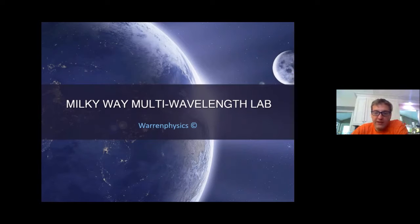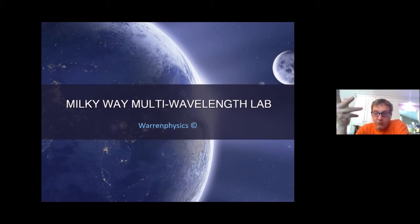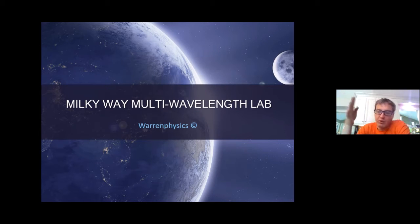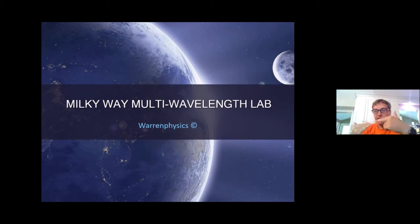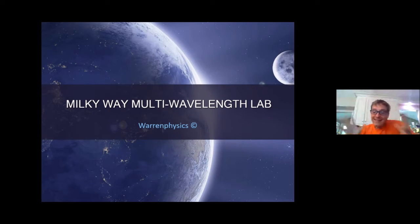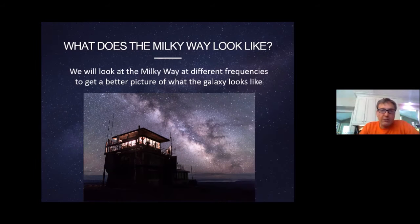This is the Milky Way multi-wavelength lab. Multi-wavelength refers to the electromagnetic spectrum — we have radio, microwaves, infrared, visible, ultraviolet, X-rays, and gamma rays, so seven categories of light. Within those, they can be broken down further; for example, infrared can be broken down into near infrared and far infrared, and each one shows a slightly different image.